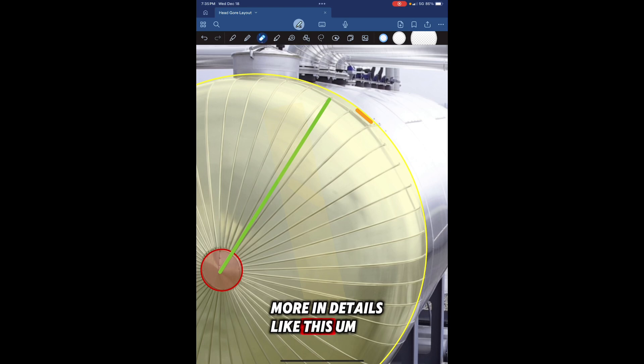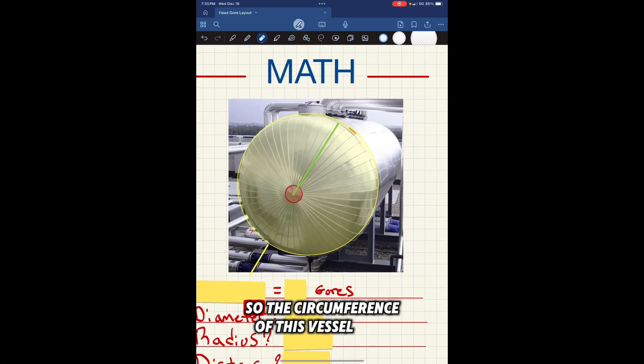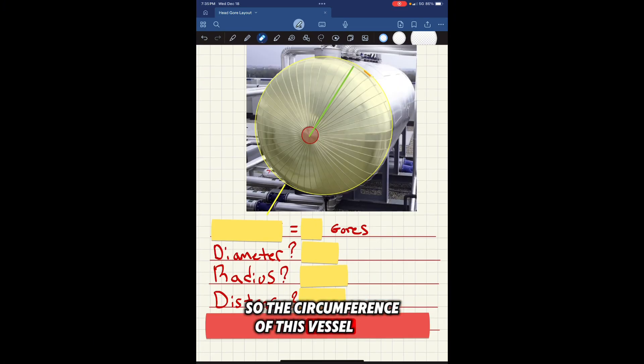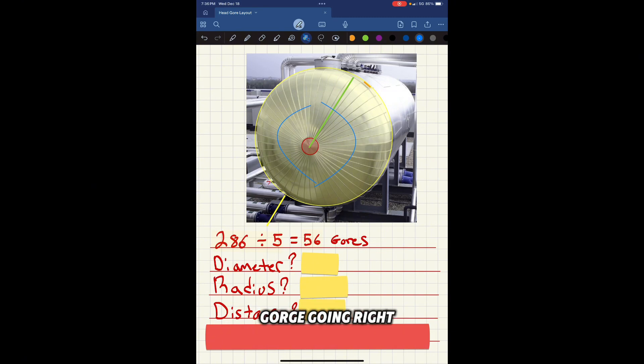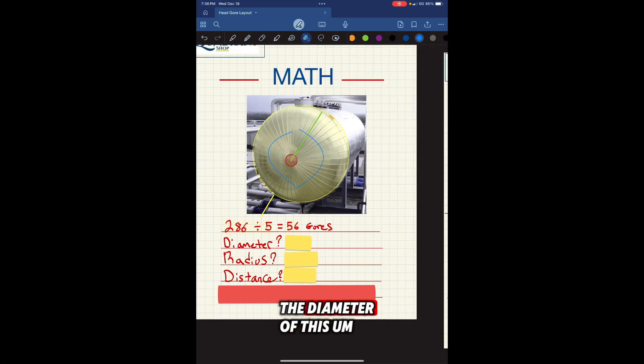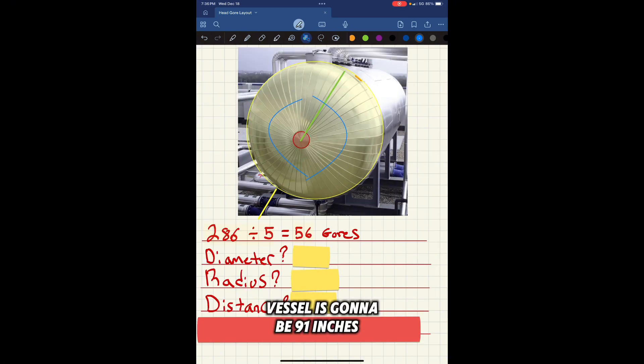Normally, a head this big goes between five or six inches. So basically, it takes over 50 gores depending on the circumference. We're getting more in details like this and how many gores it's going to take total. The circumference of this vessel is basically 286. You divide that by five inches, which is the back of your gore, and that's going to give you the number of gores - 56 gores. That means 28 gores going left and 28 gores going right.